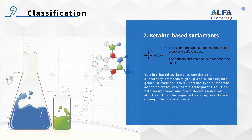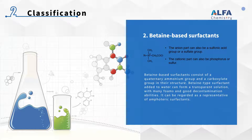Betaine-based surfactants consist of a quaternary ammonium group and a carboxylate group in their structure. Betaine-type surfactant added to water can form a transparent solution with many foams and good decontamination abilities, and can be regarded as a representative of amphoteric surfactants. They are known for their mildness and compatibility with human skin, making them the preferred choice in personal care products for individuals with sensitive skin. Additionally, betaine is also utilized in fabric softeners, hair conditioners, and baby care products.